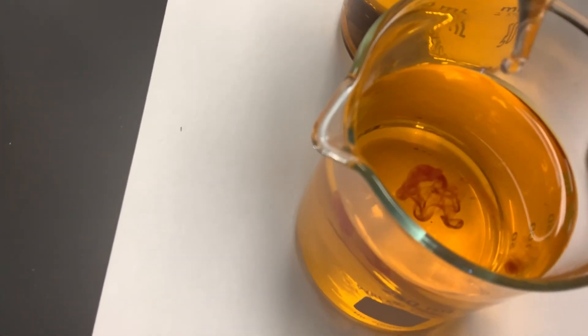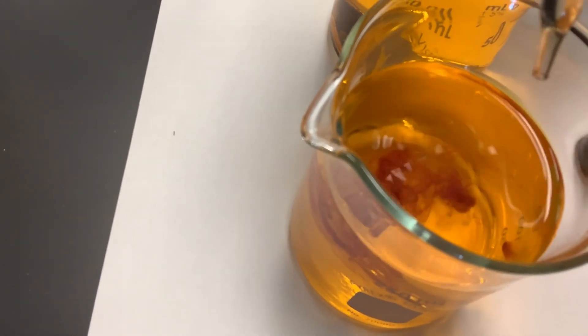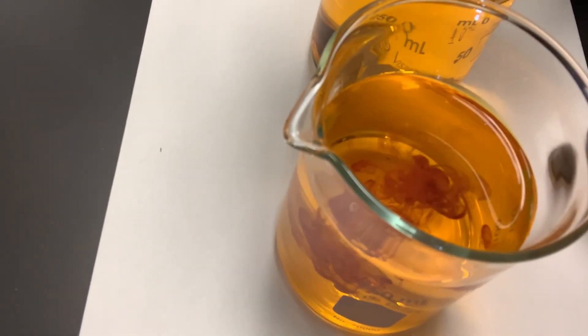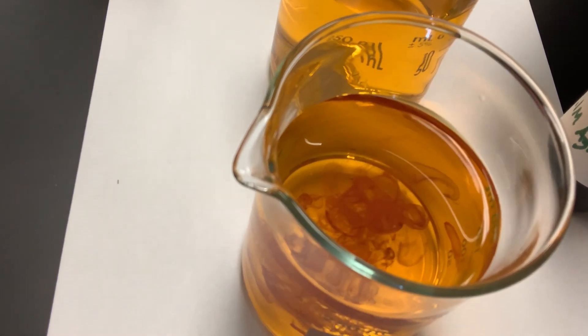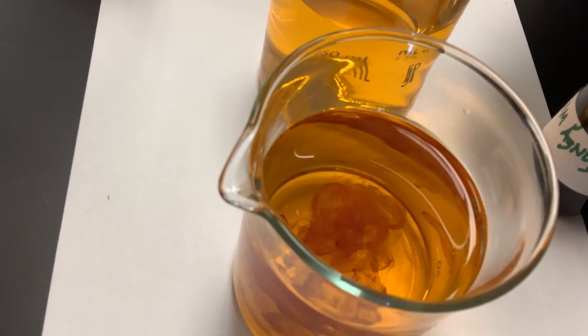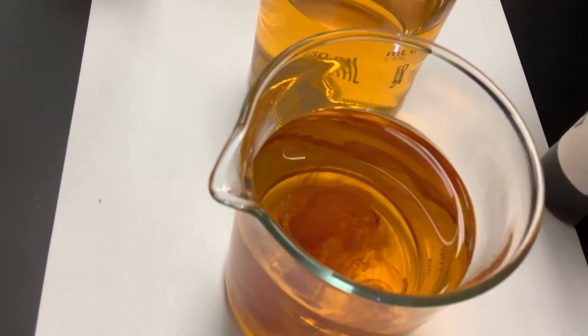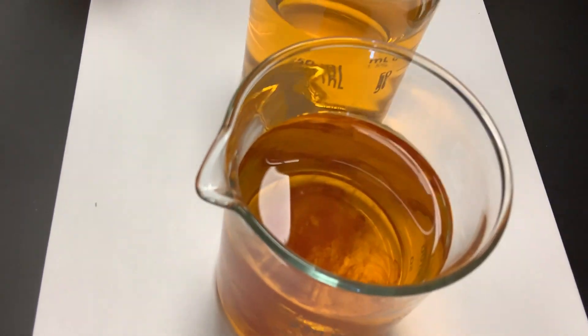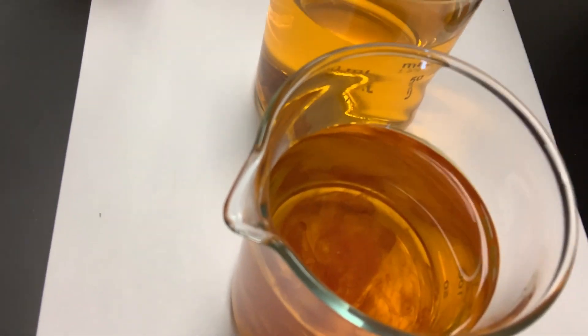It looks almost blood red. We'll put a few drops in there. There we go. And that now becomes a heterogeneous mixture because we have a solid in the liquid. We have two different phases there. And it's suspended in there.